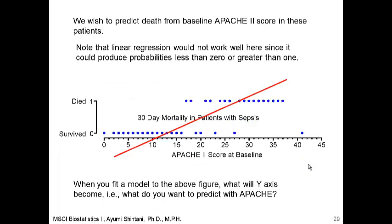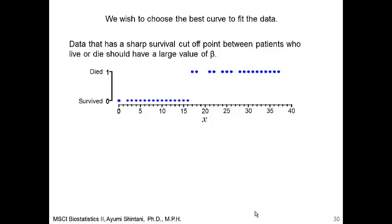Let's see what happens if you fit linear regression with this data. Linear regression would not work well since it could produce predicted values that go beyond 1 and below 0. Since patients who survived are coded 0 and patients who died are coded 1, those out-of-range values do not make any sense. Instead, we are going to fit a non-linear curve so that it does not go beyond 1 and does not go below 0. This is the form or shape of logistic regression.